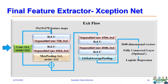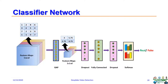We replaced the last fully connected layer and added our classifier network. Our classifier network consists of a global average pooling layer with a dropout layer, followed by a fully connected layer with a dropout, and finally a softmax layer for classification.